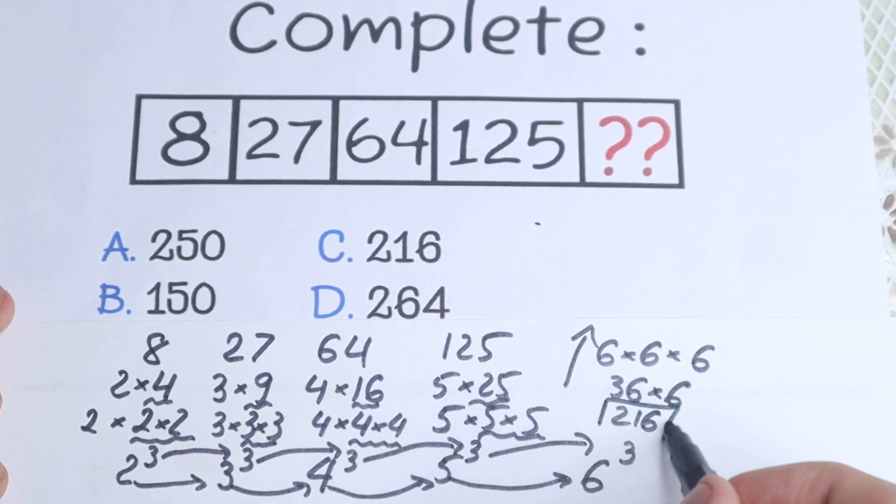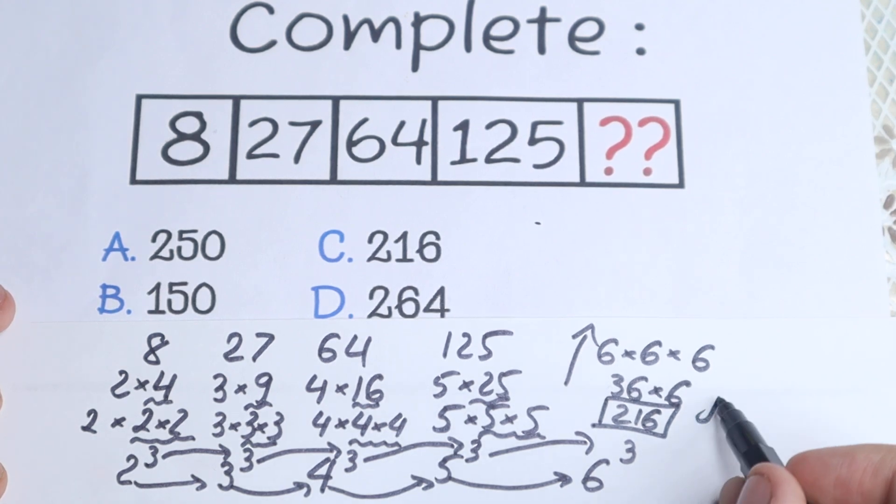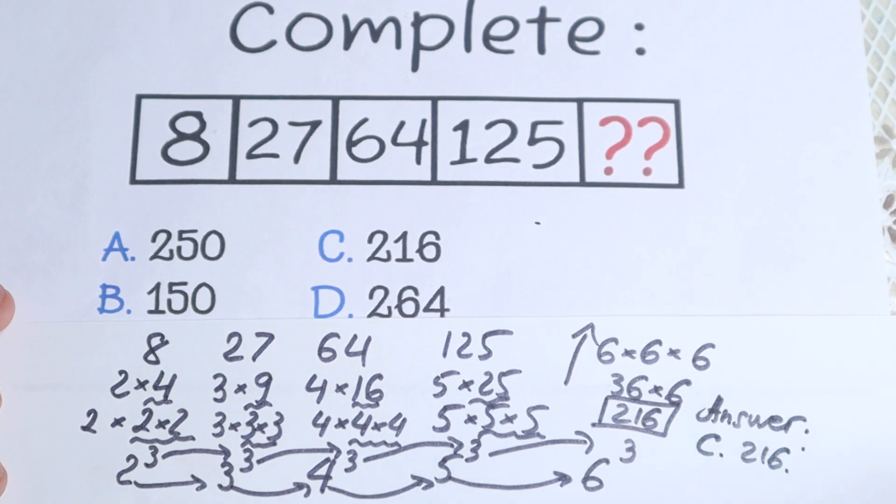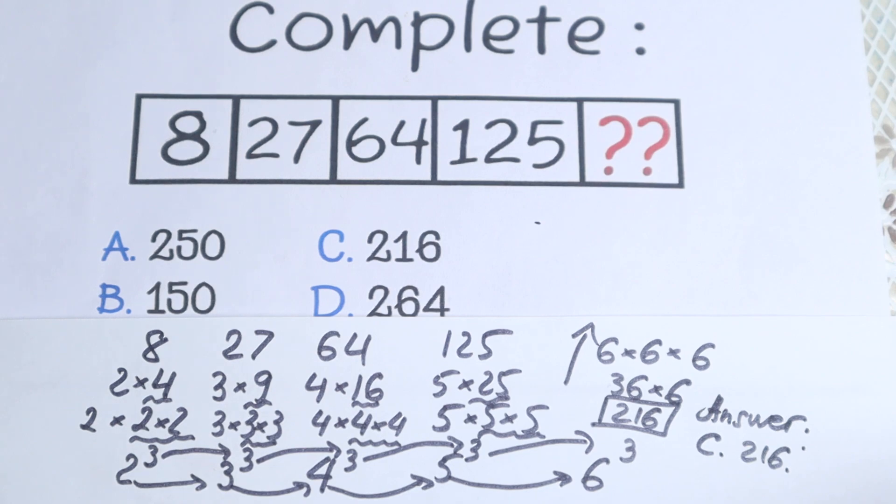This is our answer to this really interesting braintest. Our answer is option C, 216. So I hope you understand this explanation, I hope your answer is the same as mine. This is only our cubes: 2 cube, 3 cube, 4 cube, 5 cube.